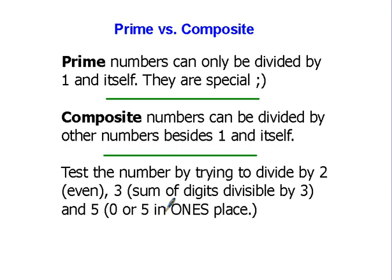Prime numbers and composite numbers can be a little tricky. First, the definition of a prime number: prime numbers can only be divided by one and itself. Composite numbers can be divided by other numbers besides one and themselves.